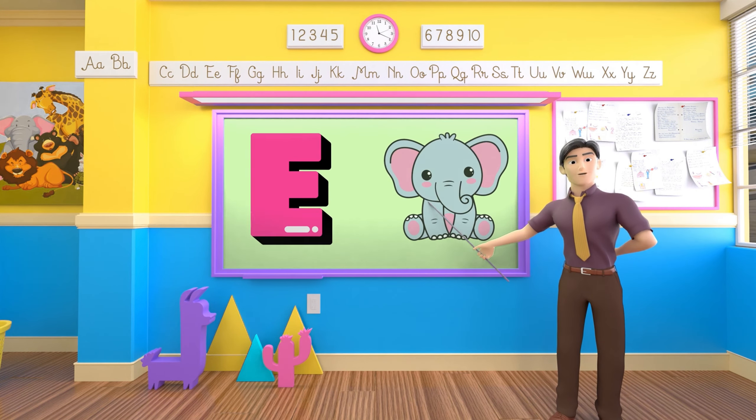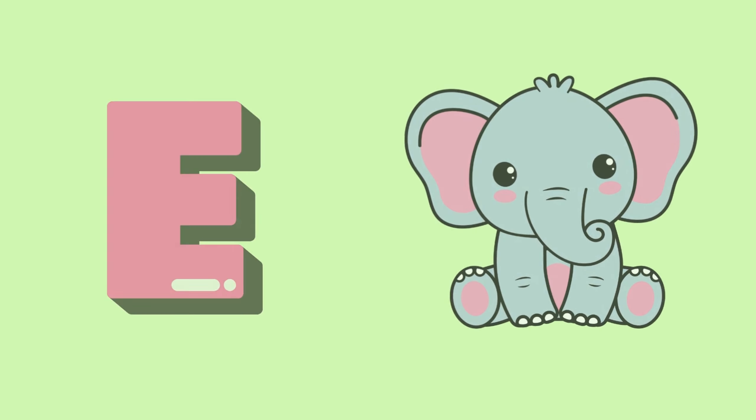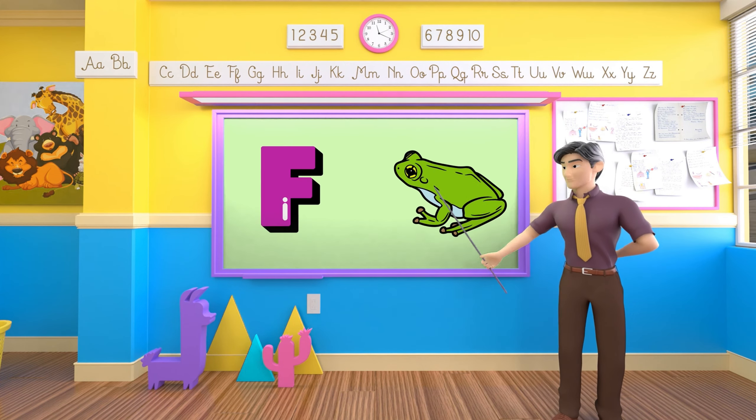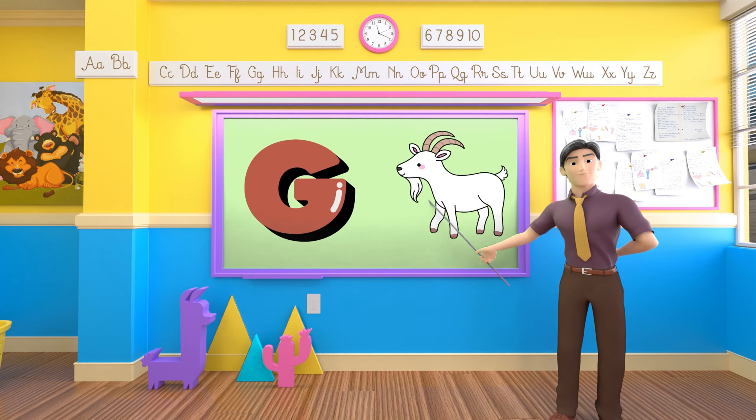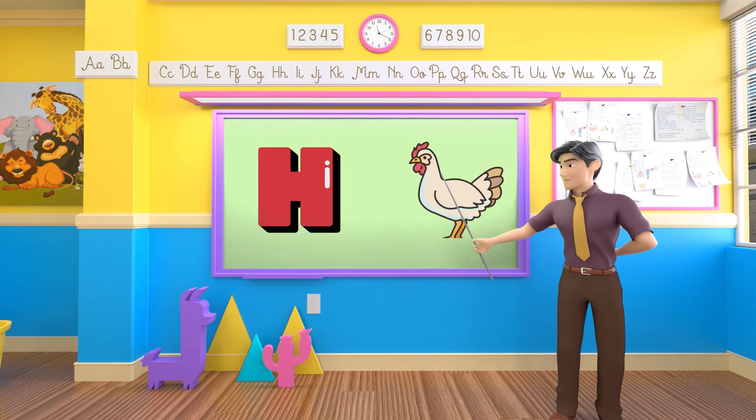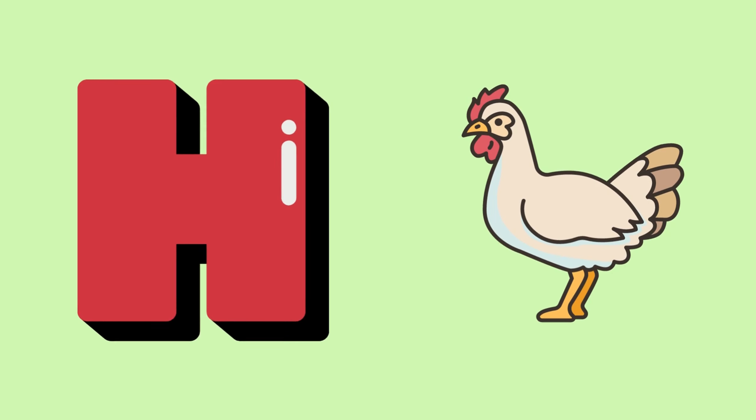E is for elephant, e-e-elephant. F is for frog, f-f-frog. G is for goat, g-g-goat. H is for hand, h-h-hand.